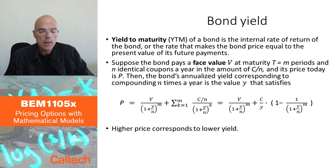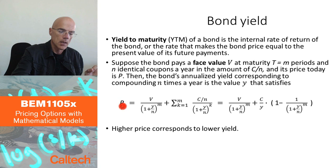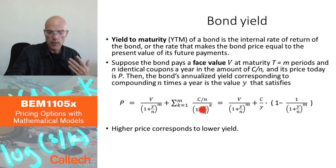There is no randomness here, because we are only looking at today's price and the future payments that are known. Today I know P, I know V, I know C, I can compute Y. Today my yield is some number Y.